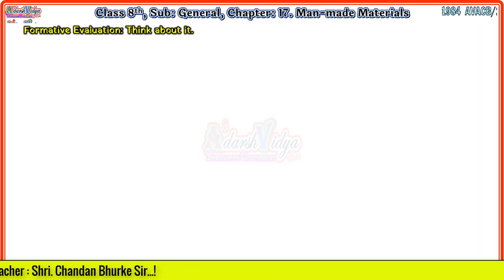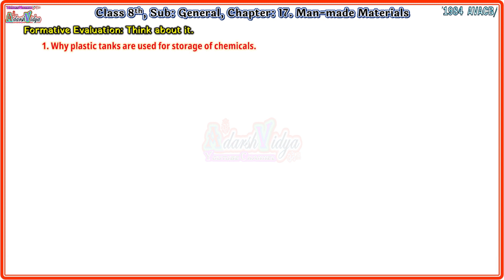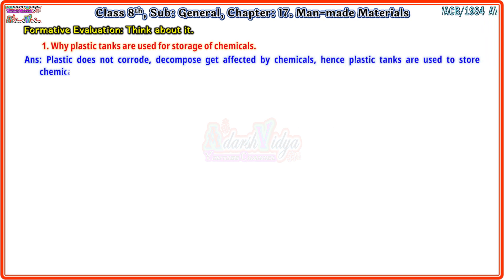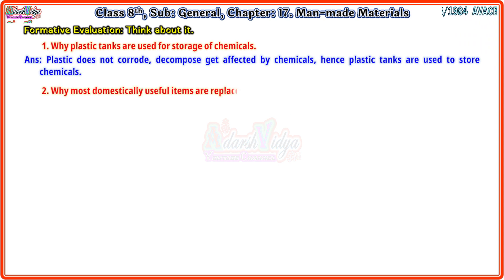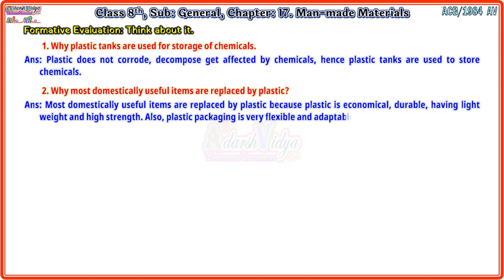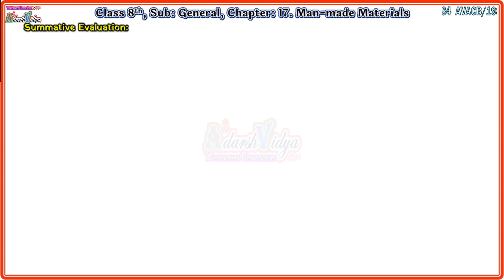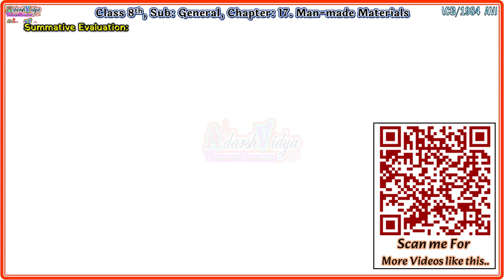We will start with formative evaluation. Think about it. First question: Why are plastic tanks used for storage of chemicals? Answer: Plastic does not corrode, decompose, or get affected by chemicals, hence plastic tanks are used to store chemicals. Second question: Why are most domestically useful items replaced by plastic? Answer: Because plastic is economical, durable, has light weight and high strength. Also, plastic packaging is very flexible and adaptable form of packaging.